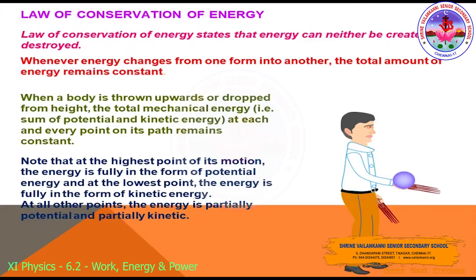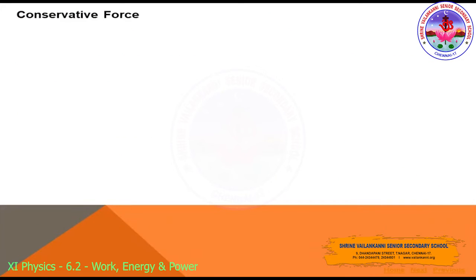This is the principle of conservation of energy. Energy can neither be created nor destroyed; it may only be transferred from one form to another, and the total energy of a system remains constant. Since the entire universe may be regarded as an isolated system, the total energy of the universe is constant. If one part of the universe loses energy, another part must gain an equal amount.